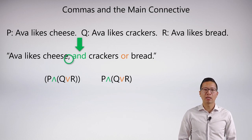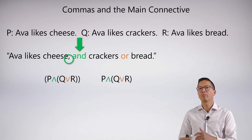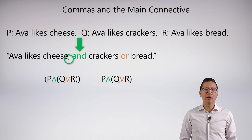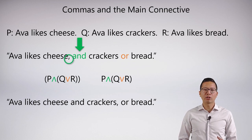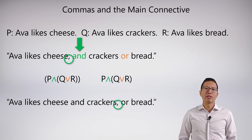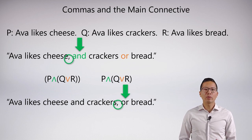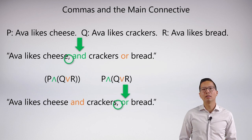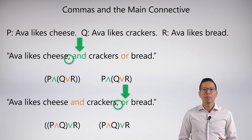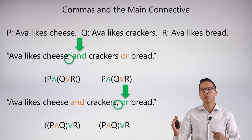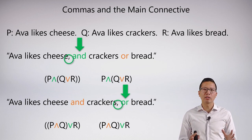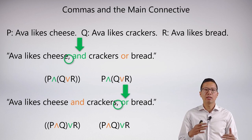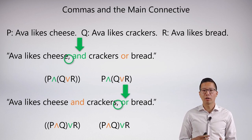When we symbolize that, the and is the main connective, giving us P and (Q or R). Alternatively, if I had moved the comma over — 'Eva likes cheese and crackers, or bread' — we get a different symbolization. The comma is now paired with the or, so the main connective is the disjunction and we get (P and Q) or R. These are critically different, and you can compare them to see that the top sentence has different truth values than the bottom sentence.